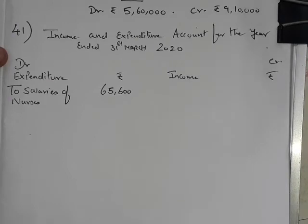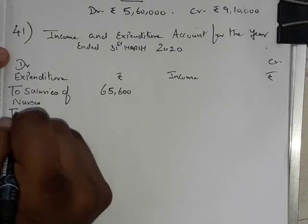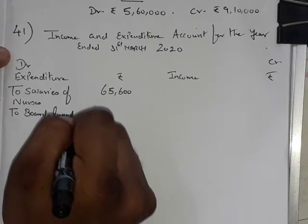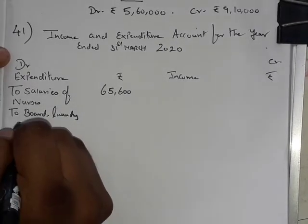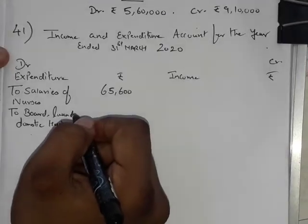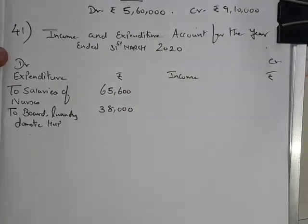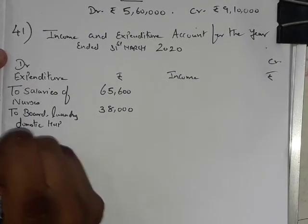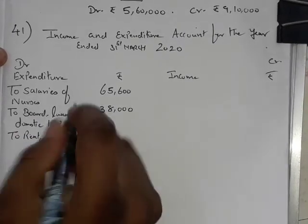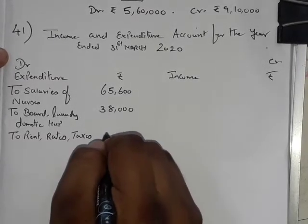Next item: To Board, Laundry and Domestic Help — value rupees 38,000. Next: To Rent, Rates and Taxes — value rupees 20,000.